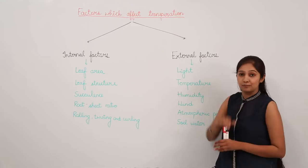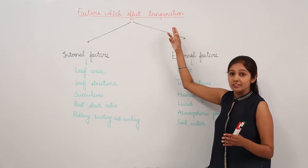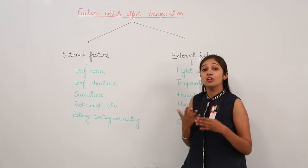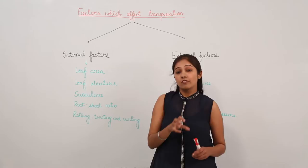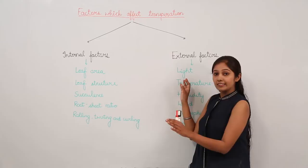We are going to discuss the factors which affect transpiration. Transpiration is a loss of water in the form of vapors. We are going to discuss which factors actually affect the rate of transpiration — how fast or how slow the rate of transpiration will be in the presence of such factors.